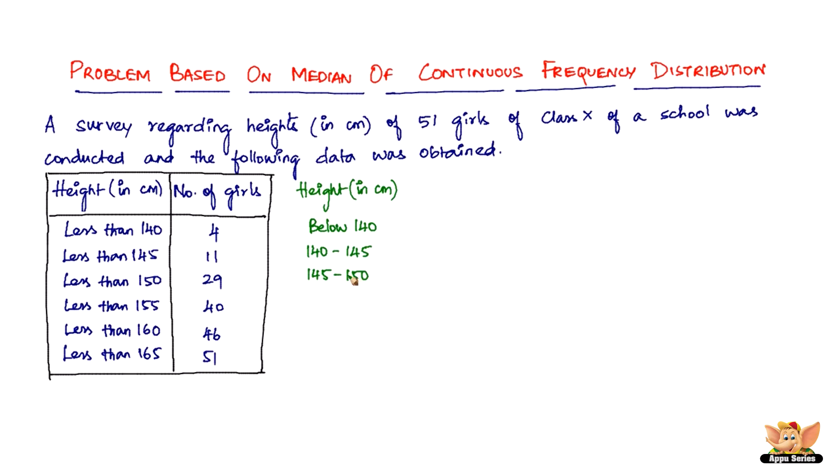Then we have 150 to 155, and 155 to 160, and then 160 to 165. And now the number of girls, it will be called as a frequency in this case. Now this will be 4, no doubt, but will it be 11 next? No, it won't be 11 next because it has to be 11 minus 4, only seven of them. If out of 11, four of them are less than 140, then only seven of them are going to be more than 140 and less than 145, right?